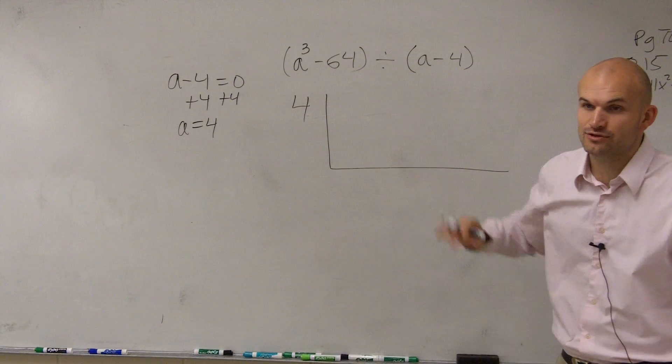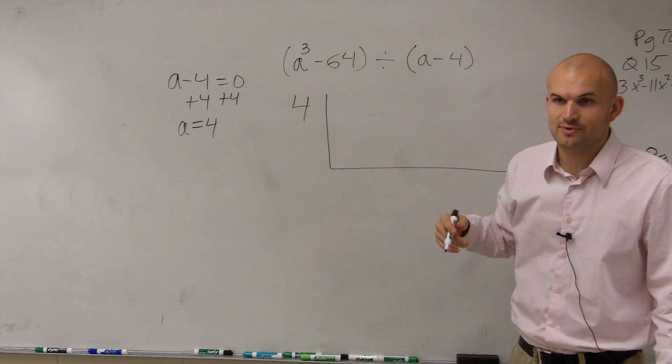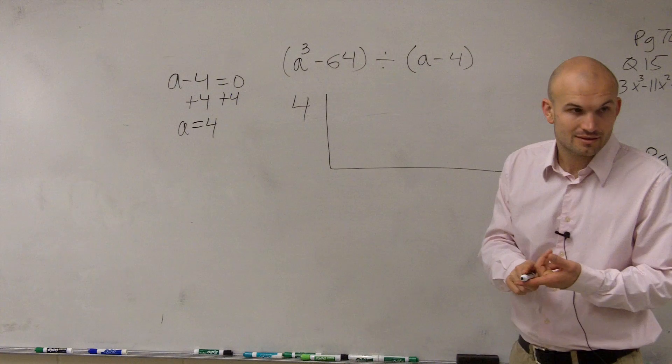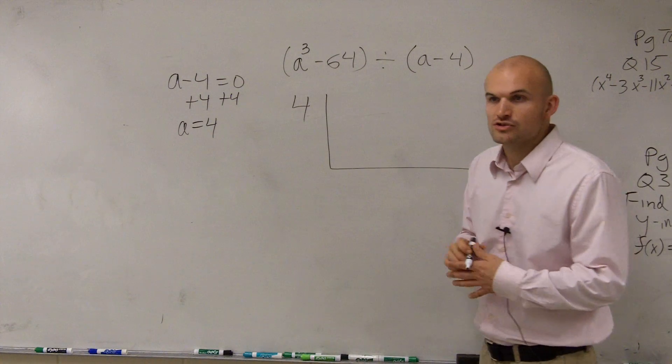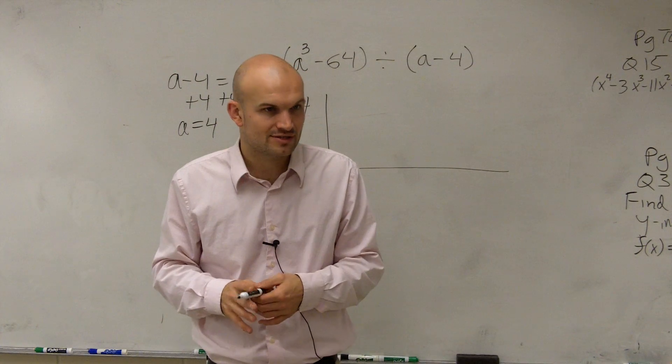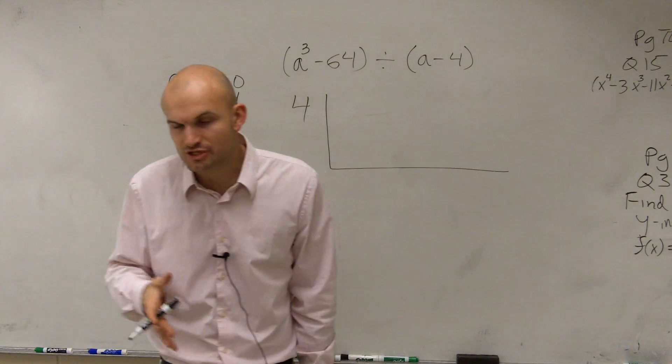Now the next part is we need to arrange these as their coefficients. But what you guys notice is we only have a cubed. We don't have an a squared. We don't have an a. And then we have a constant. So we need to make sure we include our place values. In long division, I said it's nice to do it, but you don't have to do it. In synthetic division,